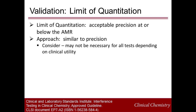The limit of quantitation is a determination of acceptable precision at or below the lowest reportable range. The experiment is similar to precision. Keep in mind that low-end precision may not impact the utility of the test; however, it is reassuring to confirm that the assay has similar precision to serum or plasma at the low end in a body fluid matrix.